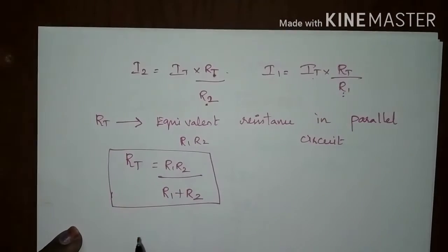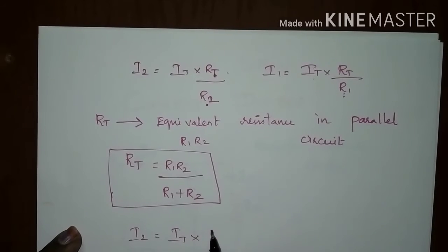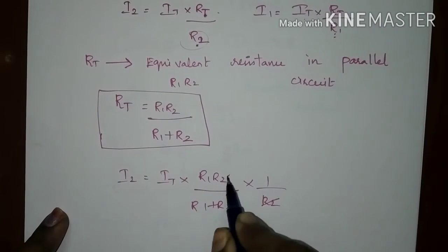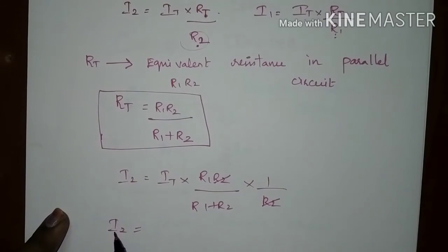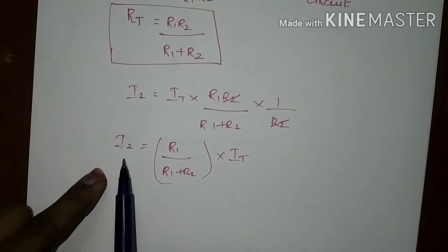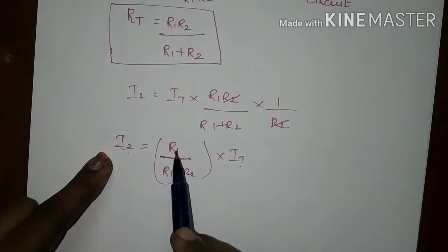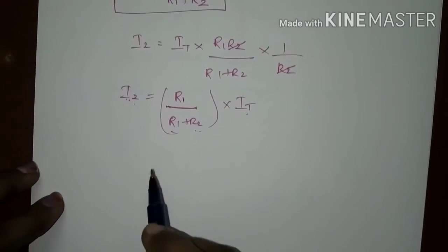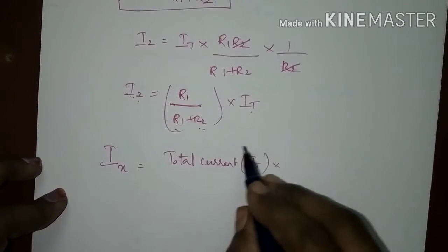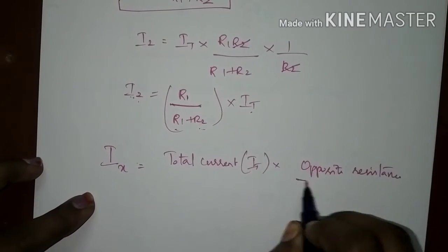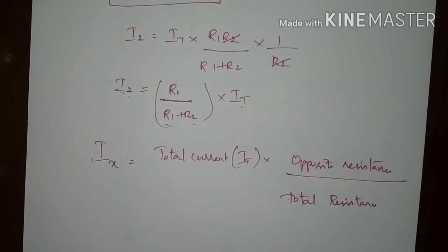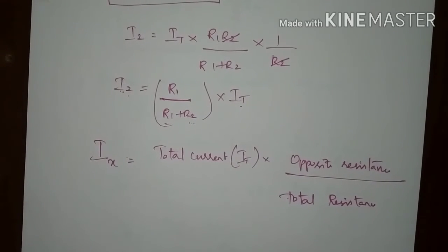The total resistance in a parallel circuit with two resistances R1 and R2 can be given by the product R1×R2 divided by R1+R2. Substituting this RT value into the current equation, I2 equals IT into (R1×R2)/(R1+R2) divided by R2. Cancelling R2, the current through R2 equals R1 divided by (R1+R2) multiplied by the total current. In general, the current through any branch IX equals IT multiplied by the opposite resistance divided by the total resistance of all parallel branches. This equation can be extended for N number of resistances connected in parallel.